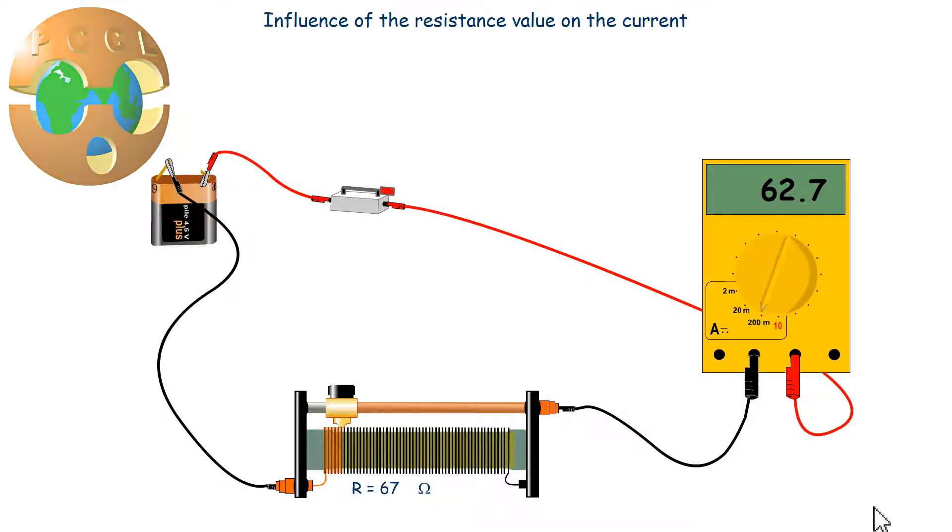Hello everyone, welcome to PCCL. The intensity of the current depends on the generator, here a battery, and on what is in the circuit.